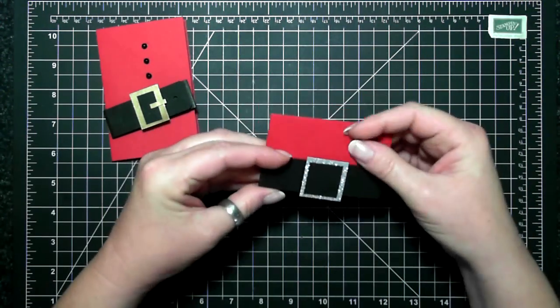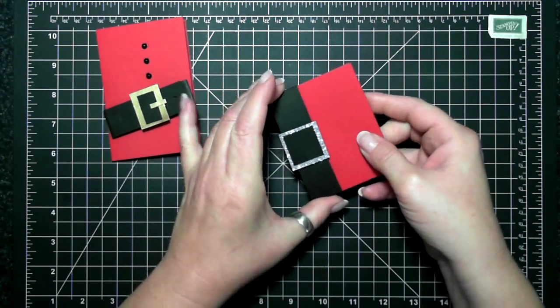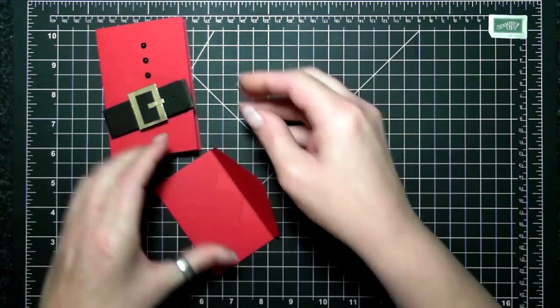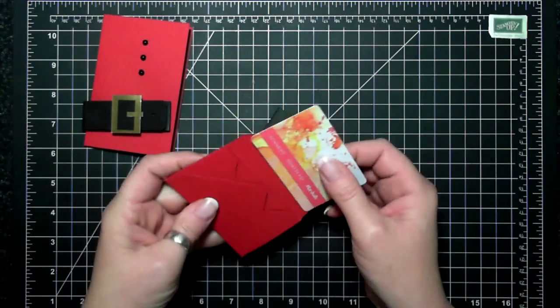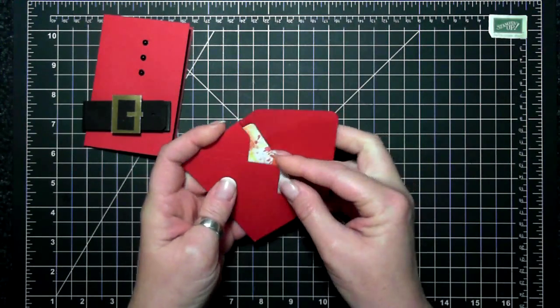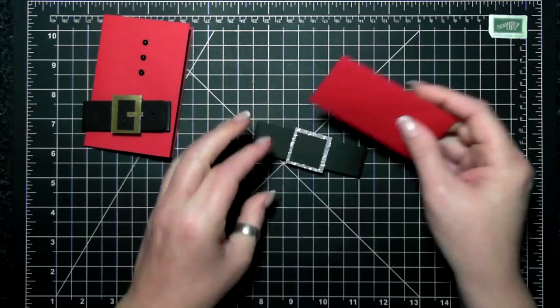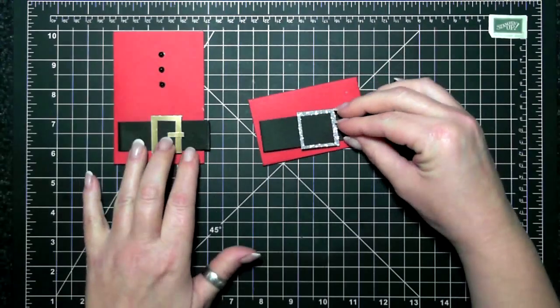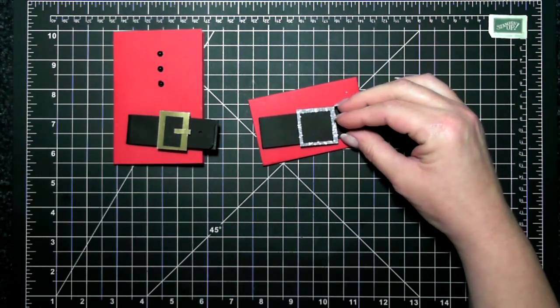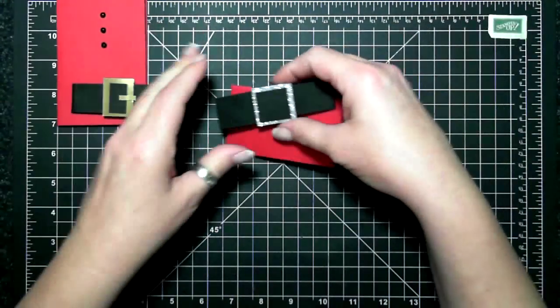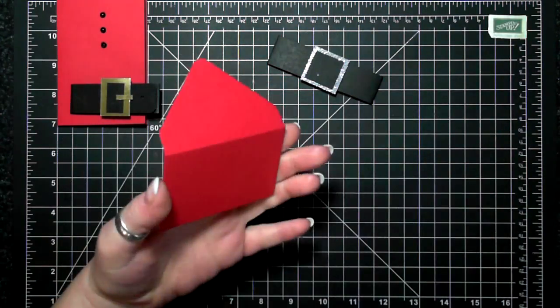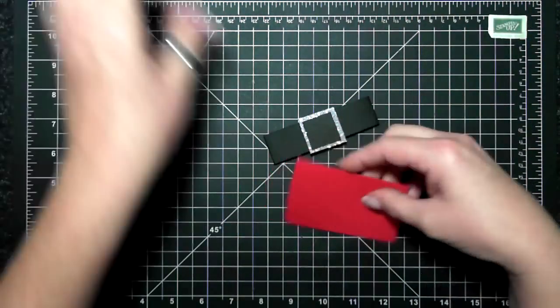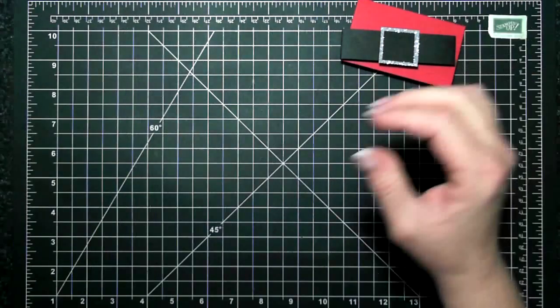And then this one is made with the envelope punch board. Really cute way of presenting your gift card. It fits in there like that with the belly bands. So two really unique, very similar projects, but they're also very different. I will show you how to make this one first.